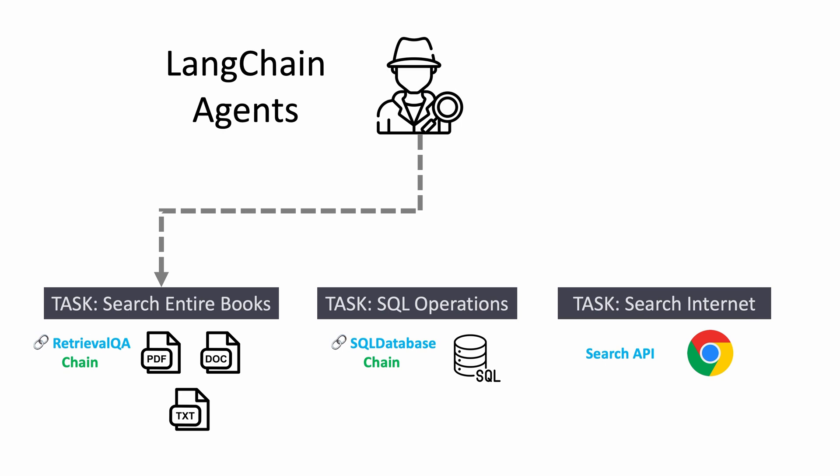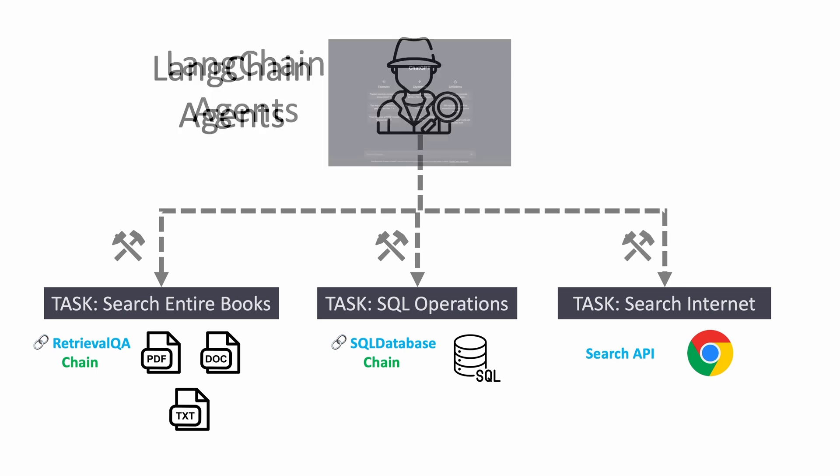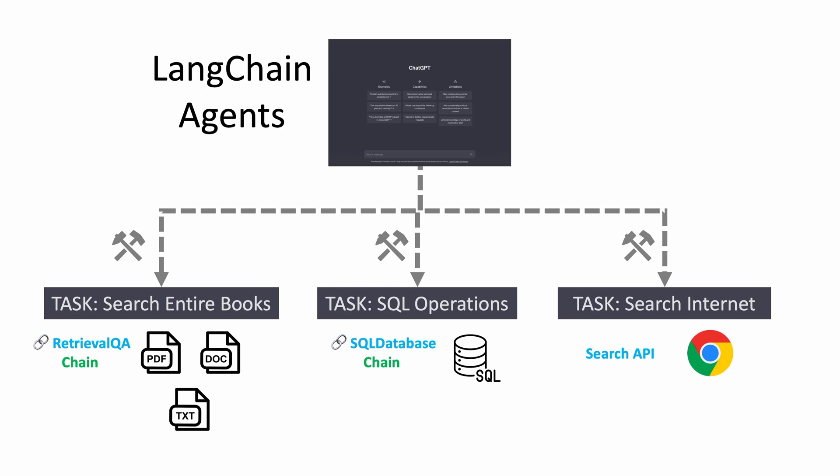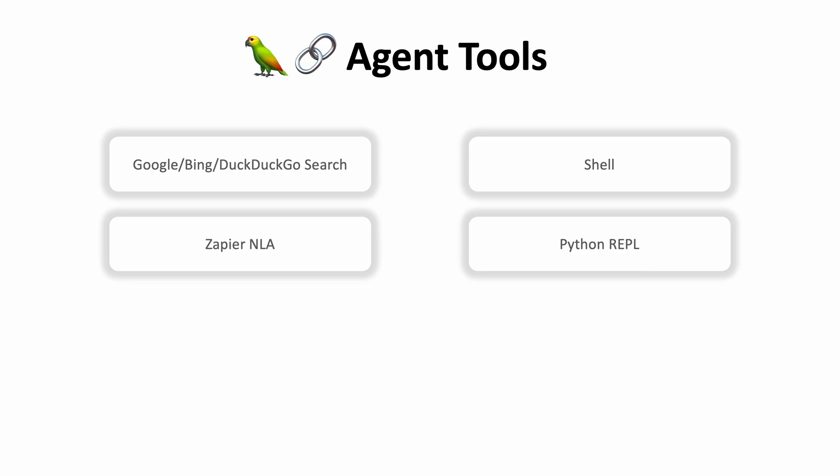Langchain agents are assistants who have access to tools and can perform tasks using those tools. And these agents could be communicated using similar chat interface where if we were to ask a question from the book, they know which tool to use, and in this case, to use the retrieval QA chain. And if it were a question about SQL operation, then they know to use that particular chain. There are a number of agents and there are multiple tools available for these agents in the Langchain library. You can search internet, you can access shell, you can also access the thousands of tools available in Zapier, as well as you can run Python function. Not just that, you can use chains as tools, as well as custom functions, and also other agents as tools.